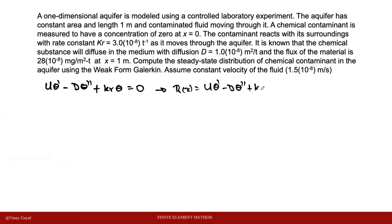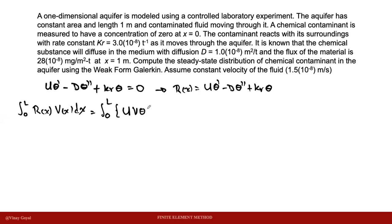To apply the weak form Galerkin we need to find first the weak form of the problem. To find the weak form, we take the integral of the product between the residual and the weight function v, to identify those terms whose derivatives can be balanced. Expanding this expression gives: the integral of (u·v·theta' minus D·v·theta'' plus kr·v·theta) dx.